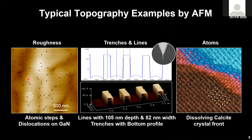On the left side there's a roughness example — a gallium nitride wafer that shows terraces as well as dislocations. We can clearly resolve both the terraces, which are very small steps, and the dislocations, which are small pits into the surface. We can extract dislocation densities. The middle shows a typical 3D measurement of trenches and lines for critical dimension metrology.